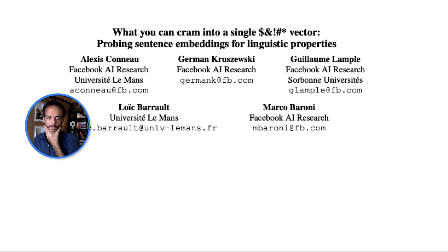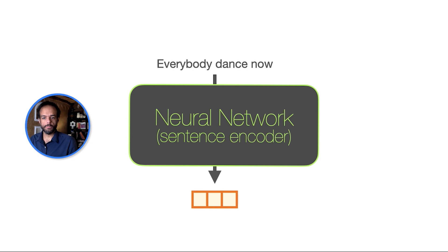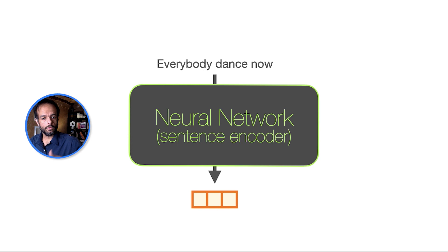One of the papers we'll look at is from Facebook AI Research, which used probes to compare sentence embedding models. A sentence embedding model is similar to the encoder — you give it a sentence and it outputs a vector representation of that sentence. Now let's go over what probing is like as a process to try to understand those representations.